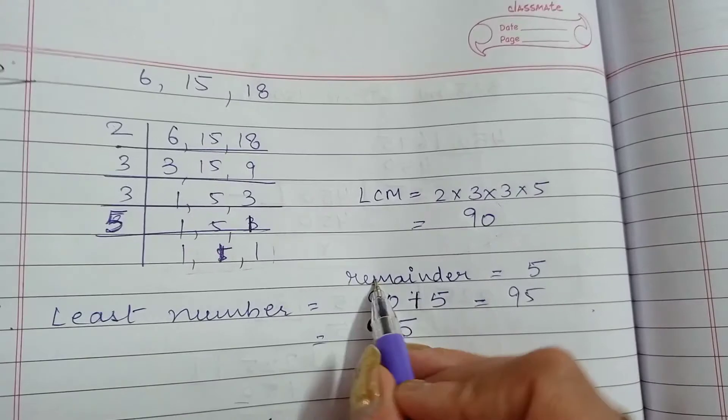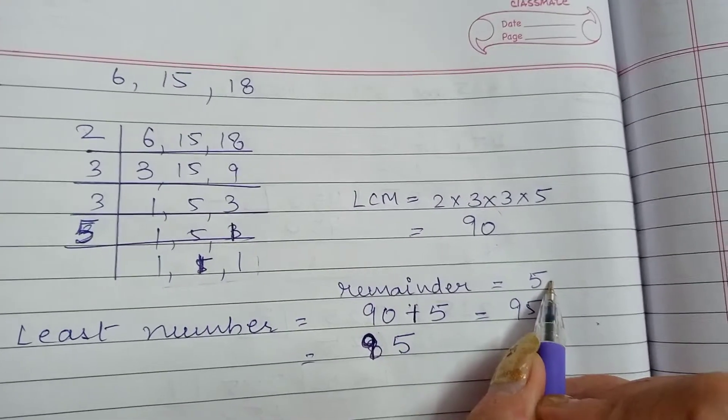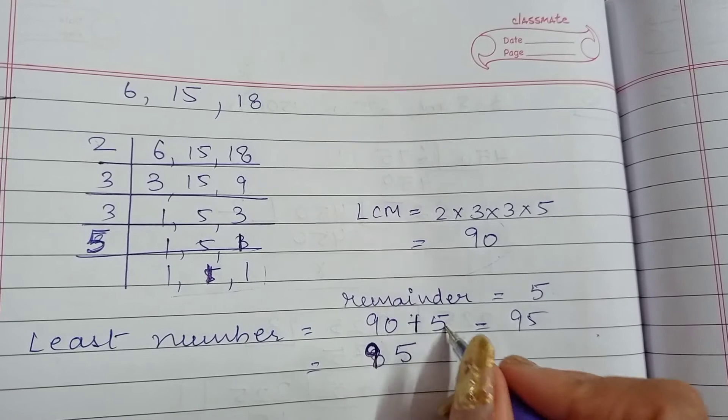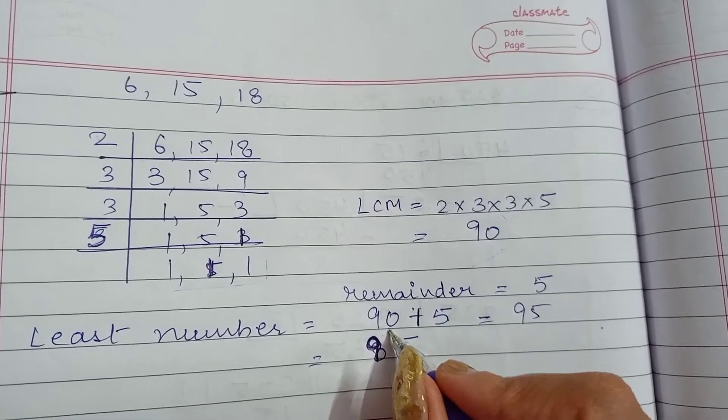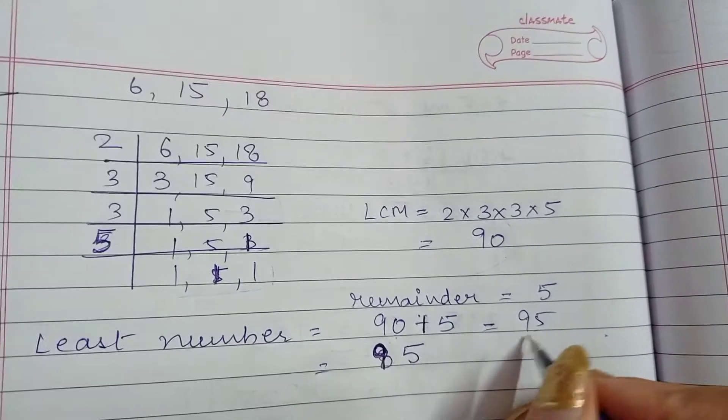But we need to find that number which will leave remainder 5. In that case what we will do? We will add 5 to our least number. 90 plus 5 is equal to 95.